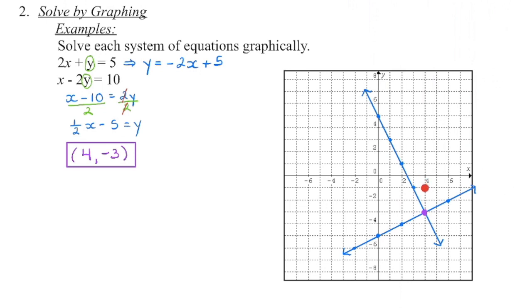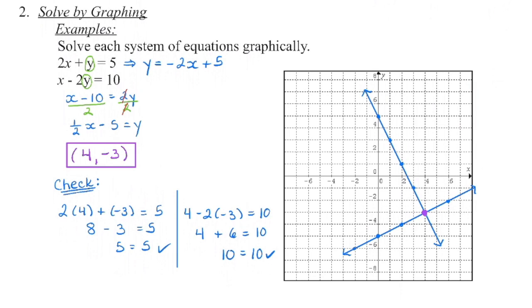The coordinates of that point are 4 and negative 3. So that is the solution to my system. And if it's just two equations like this, we always write it as an ordered pair. And now we're going to check if this solution satisfies both equations.